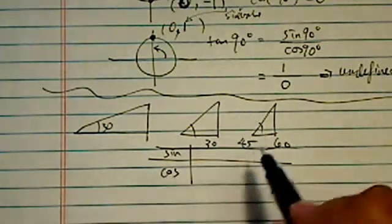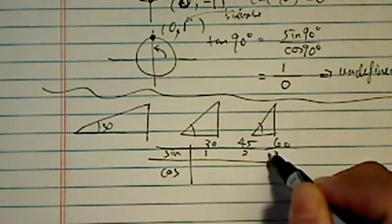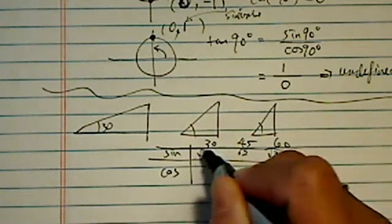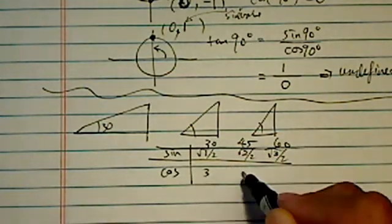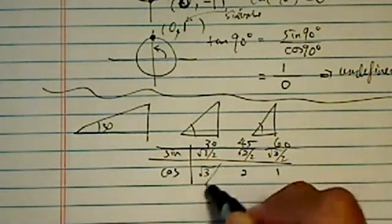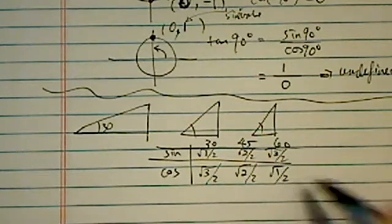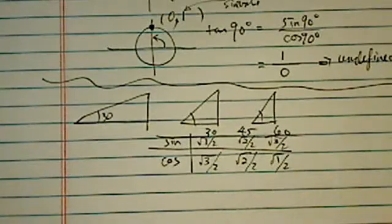Here's a quick way to remember. You go 1, 2, 3, put a radical on, divide it by 2. If you want to check it somewhere, and for cosine, it's completely backward. 3, 2, 1, put a radical on, and divide it by 2.